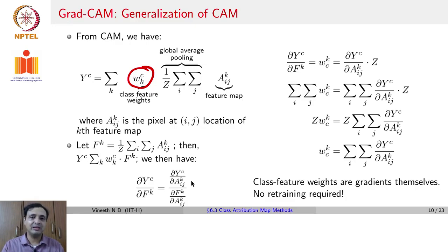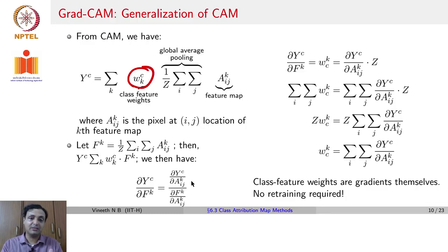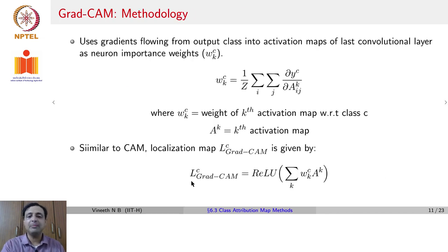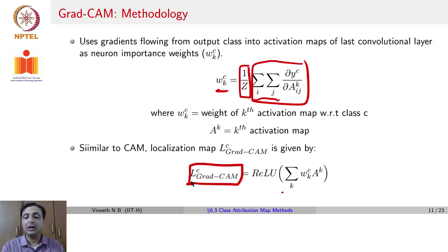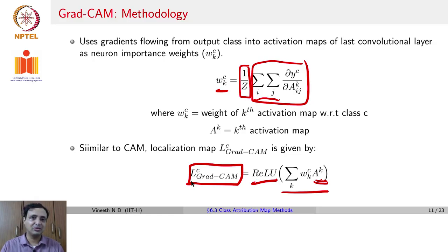We do not need global average pooling and we do not need the retraining. Those weights from global average pooling can be obtained as gradients of the last layer scores with respect to any activation map. So we write w_c^k as (1/Z) summation_i summation_j (dou yc / dou a_{ij}^k). The final localization map in GradCAM is given by ReLU of summation_k w_c^k A^k, where A^k are the k activation maps, and we apply a ReLU to retain only positive correlations.